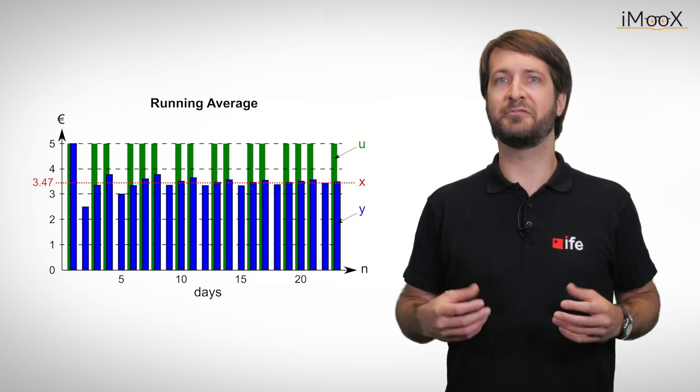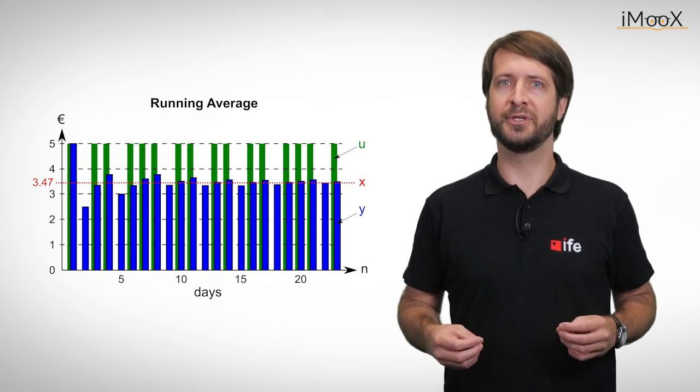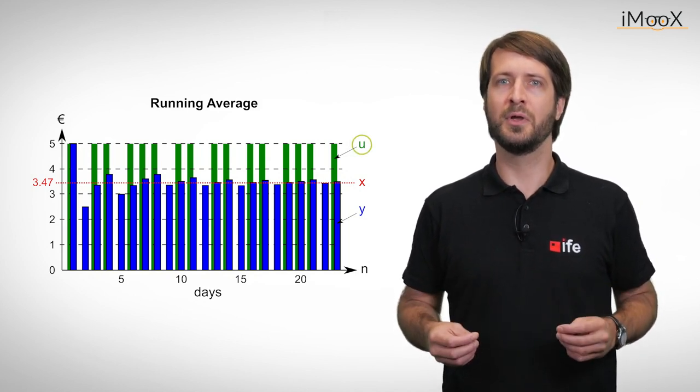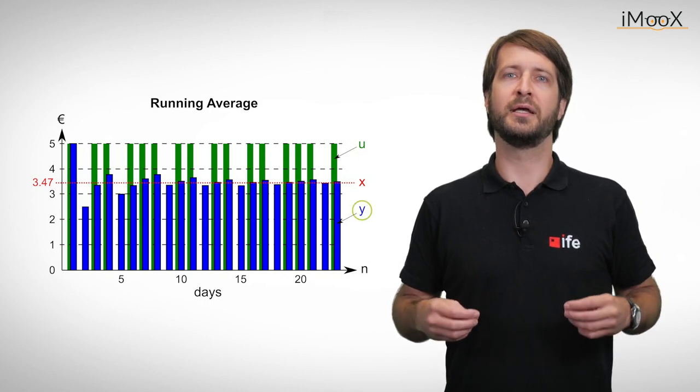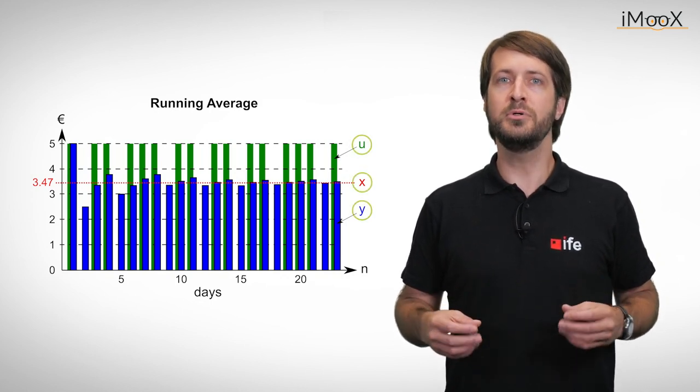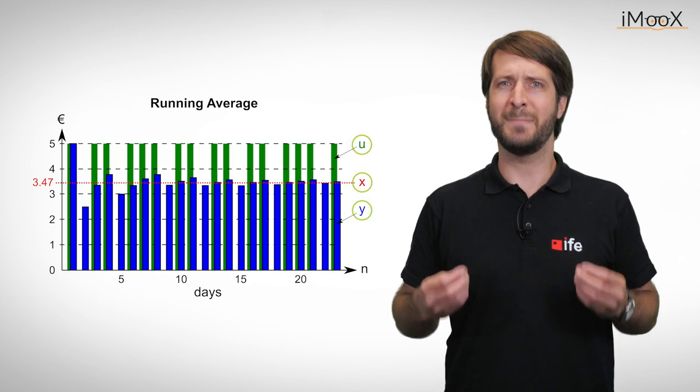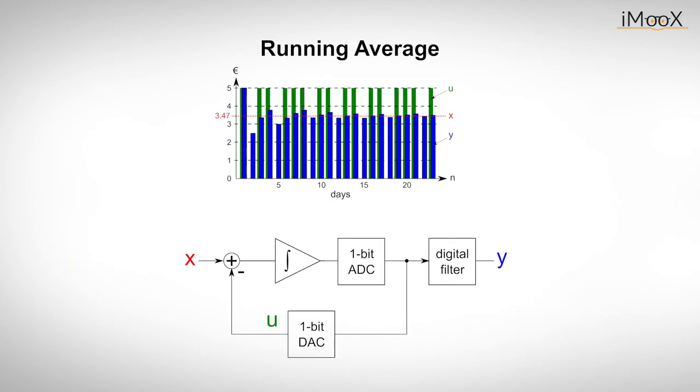Each single 5 euros or 0 euros denoted as u has no meaning. One can determine y and therefore x from u only by averaging many samples. The entire process can also be depicted in the flowchart where the price x is the input of the circuit, u is the occasional 5 euro bill and y is the average value the engineer has to pay for the coffee each individual day.